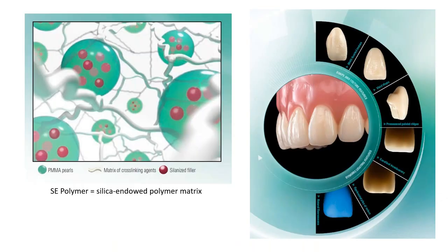Vigo is made of an SE polymer — a silica endowed polymer matrix — which means it has a very high Vickers hardness and a very low abrasion rate, so they're going to last a long time and not wear very much. Unlike milled or printed teeth, these are a true denture tooth, so you actually get translucency, visible layering, fluorescence, and opalescence built in. These are very, very nice looking teeth.